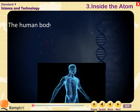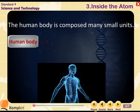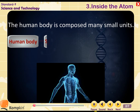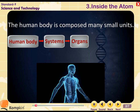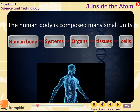The human body is composed of many small units called systems. The systems are composed of many organs, the organs are made up of tissues, and the tissues are made up of cells.